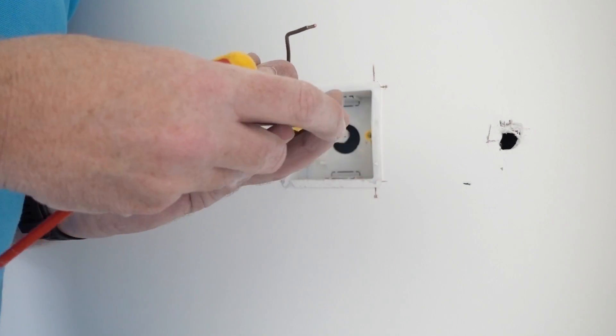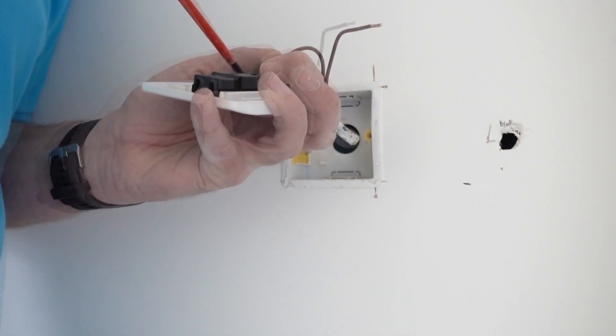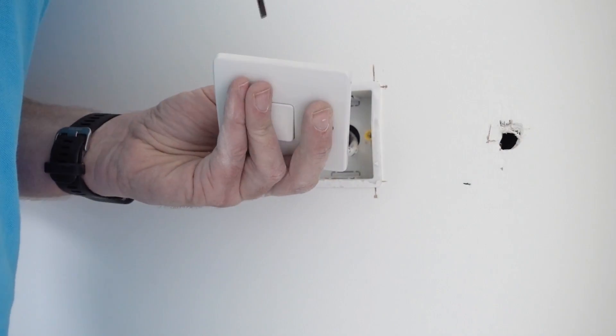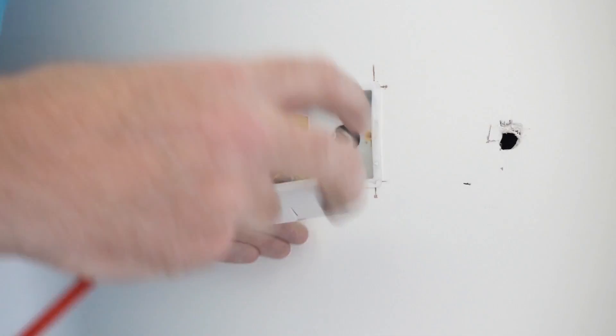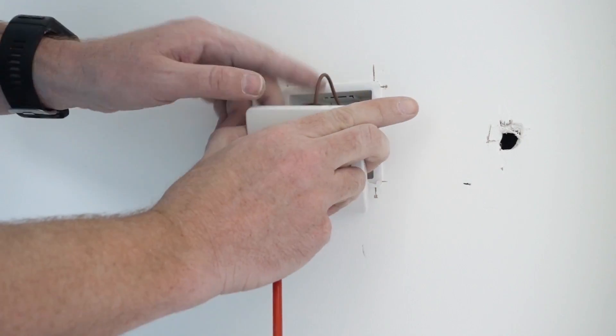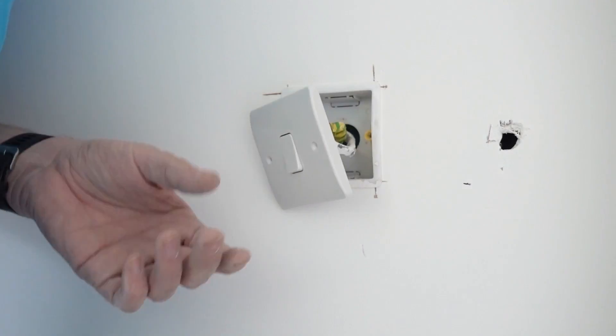So one wire goes into the common. And the other one, well it doesn't really matter but I always put it into the one. Yeah, just push that cable into the wall a bit better. And there you go. That is pretty much job done.